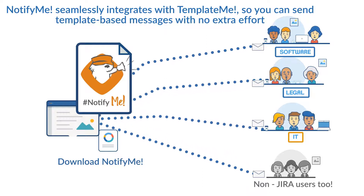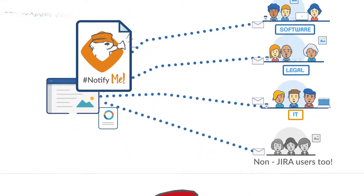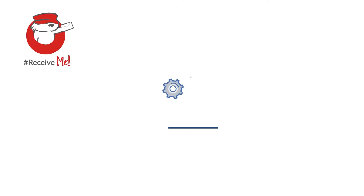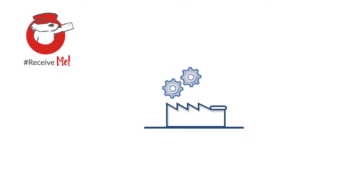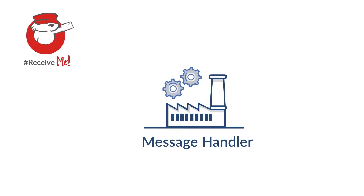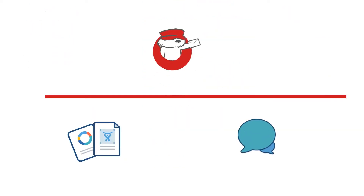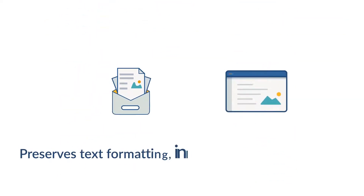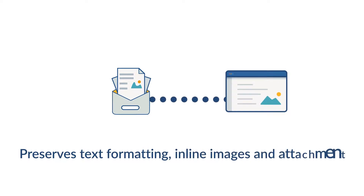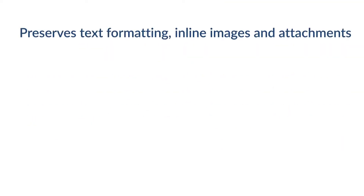Receive Me — meet the enterprise message handler that will make your day-to-day work much easier. Receive Me was born to ease the process of creating nicely outlined issues and comments from email messages. This advanced message handler preserves text formatting, inline images, and attachments as they were specified in the original message.